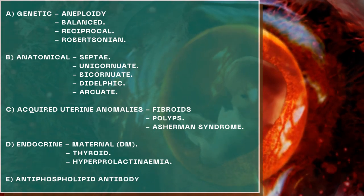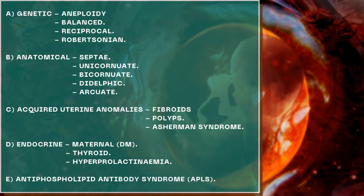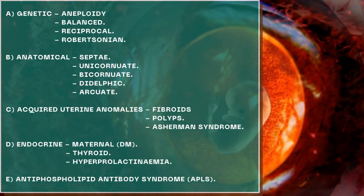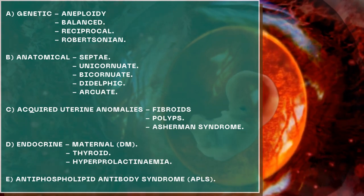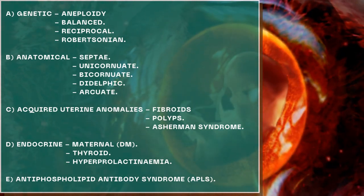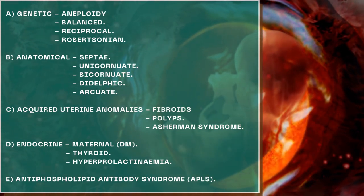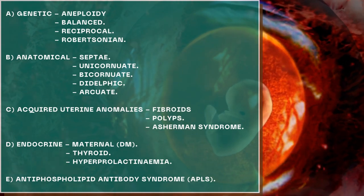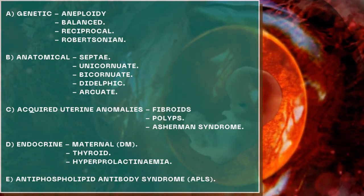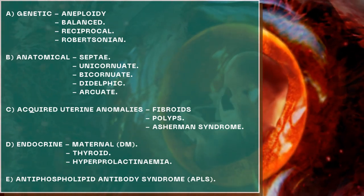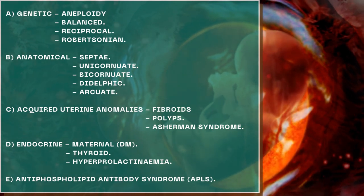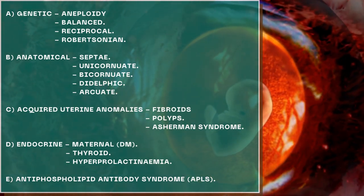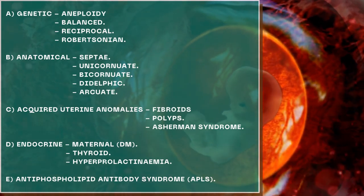Patients can also have acquired uterine anomalies, which are very common. Close to about 40% of patients of African origin may have fibroids, polyps, and Asherman's syndrome. Asherman's syndrome may result from D&Cs performed because of miscarriages — the evacuation and D&C procedures can expose patients to Asherman's syndrome, which is by definition adhesions that grow in the uterine cavity. This can further increase the risk of recurrent pregnancy loss.